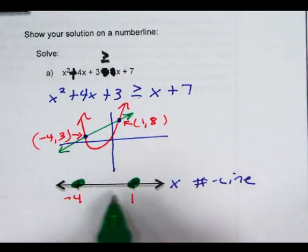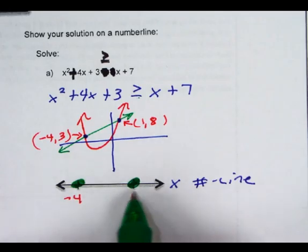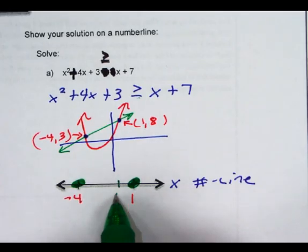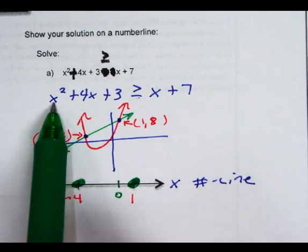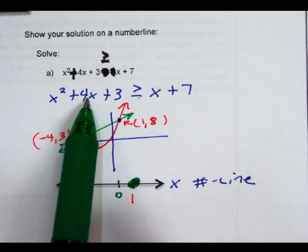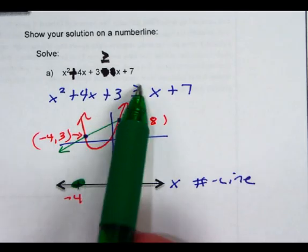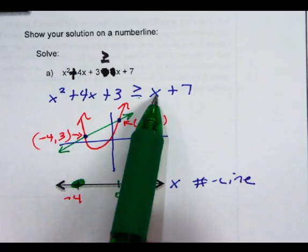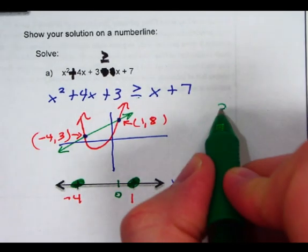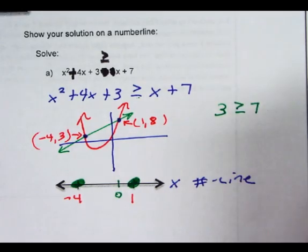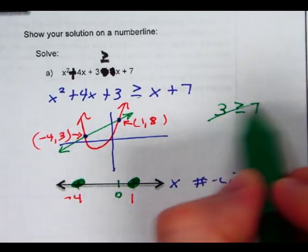Then I need to test a point. The easiest testing point is 0. 0 would live somewhere like right here on my number line. So I test 0. Plug it in. 0 squared is 0, 4 times 0 is 0. So is 3 greater than or equal to 7? Of course not. So that is not true.